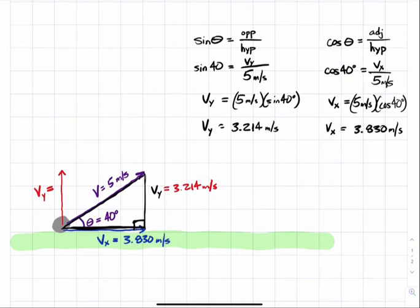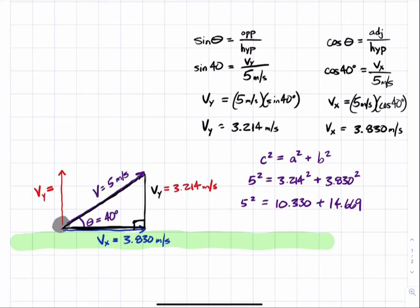Pythagorean's theorem says that C squared equals A squared plus B squared. So 5 squared should equal 3.214 squared plus 3.830 squared. And checking these values on the calculator verifies this within our precision.